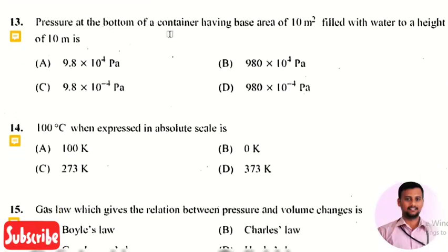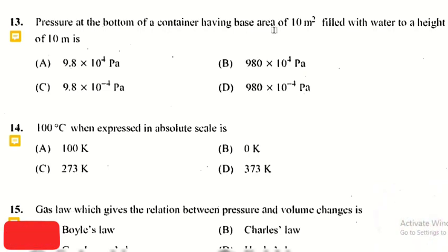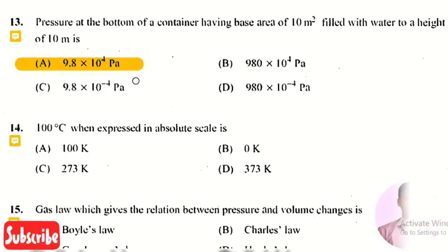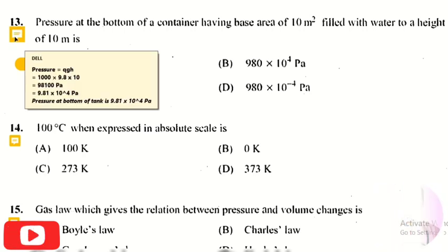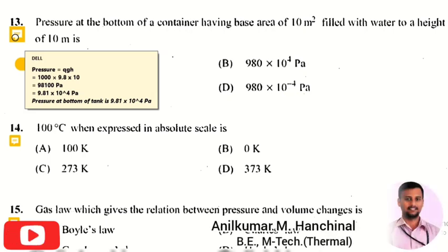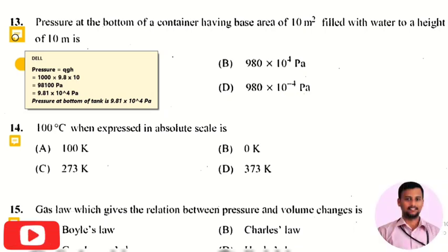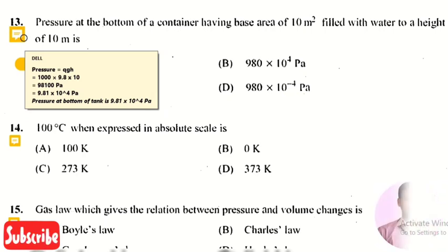The next question: the pressure at the bottom of a container with base area 10 m² filled with water to a height of 10 m — what is the pressure? The right answer is 9.81 × 10⁴ Pascal. Pressure = ρgh, where ρ (density of water) = 1000, g = 9.81, and h = 10. Multiplying gives 98100 Pa, or 9.81 × 10⁴ Pascal.